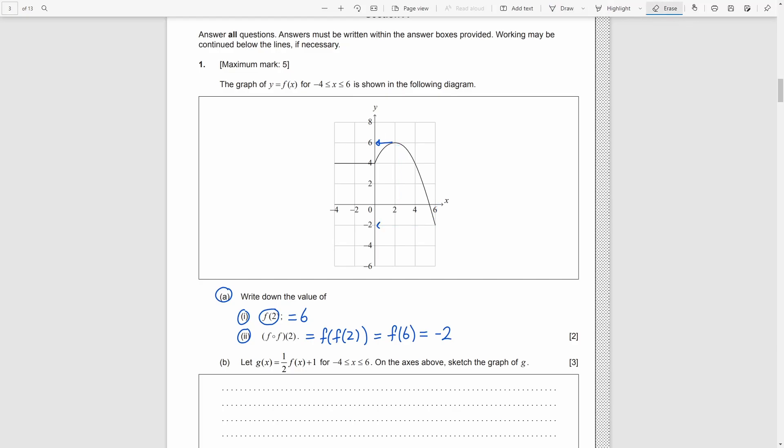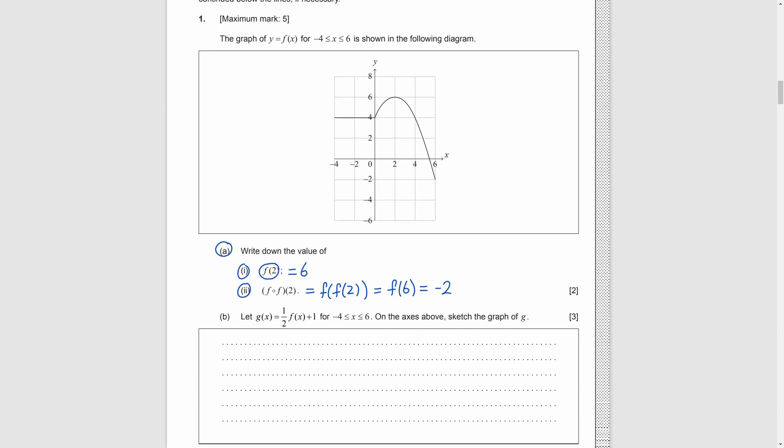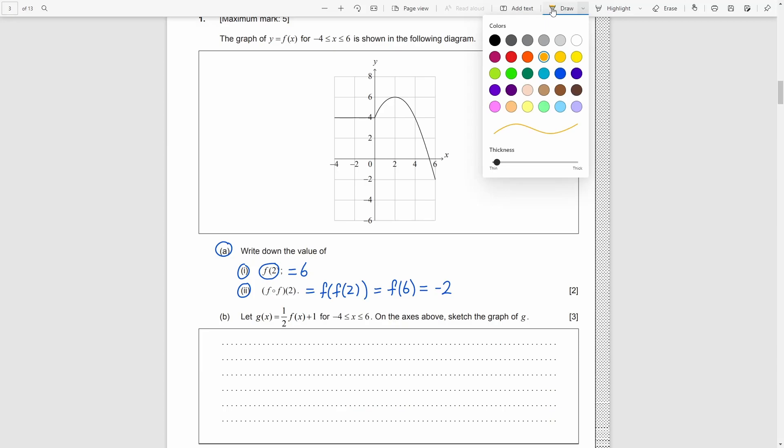And then in part B, it gives us another function G which is related to the previous function F. This is a question about transformation of graph. G(x) is equal to half F(x) plus 1. So it consists of two transformations. First, we need to consider half F(x).